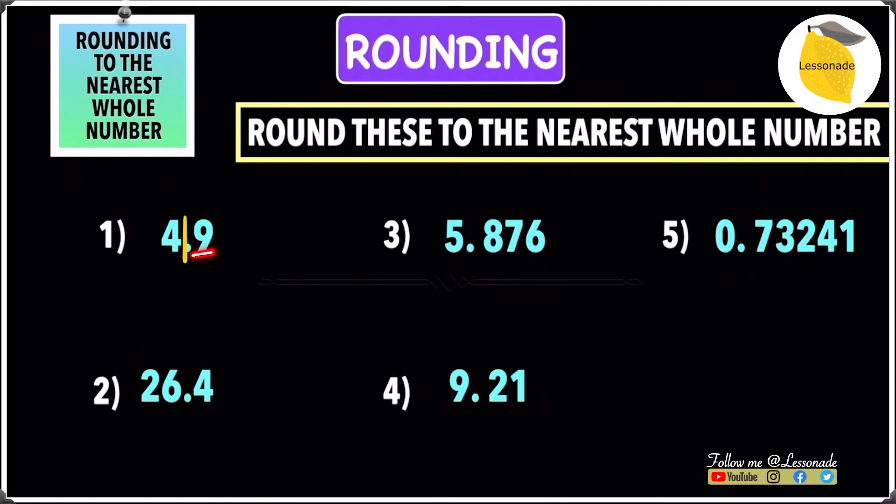If the digit after the line is 5 or above, you add 1 to the 4, which means you get 5. For the remaining digits, you can write 0 for them, but 5.0 is the same as 5, so just rub the 0 out. You get 5 as your answer.